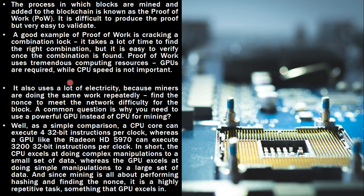It also uses a lot of electricity because miners are doing the same work repeatedly — finding the nonce to meet the network difficulty for the block. A common question is why you need a powerful GPU instead of a CPU for mining. A CPU core can execute 4 32-bit instructions per clock, whereas a GPU excels at doing simple manipulations on larger sets of data. Since mining is all about performing hashing and finding the nonce, it is a highly repetitive task — something that a GPU excels in. That's why we use GPU for proof of work in blockchain.